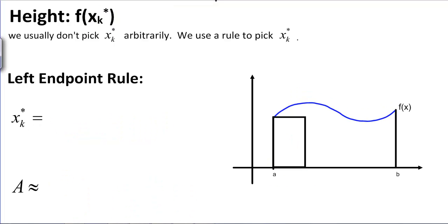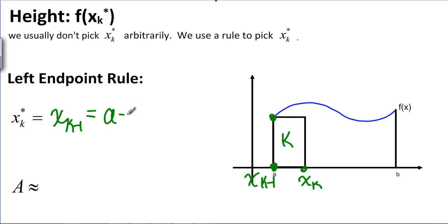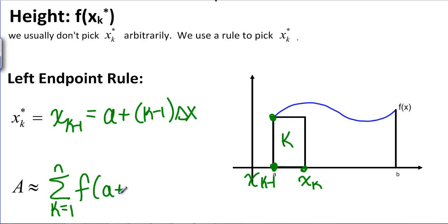For left endpoints, rectangle number K again has grid points X sub K minus 1 and X sub K. If we want the left endpoint, we plug in X sub K minus 1, which equals A plus (K minus 1) delta X. So the formula for area becomes the sum from K equals 1 to N of F of A plus (K minus 1) delta X, times delta X.